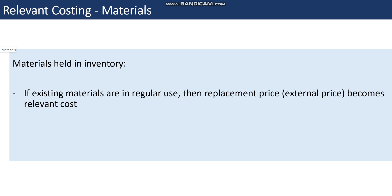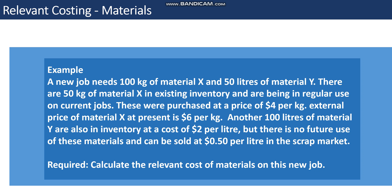Let's look at a short example. A new job needs 100 kilograms of Material X and 50 liters of Material Y. There are 50 kilos of Material X in existing inventory, being used regularly on current jobs; these were purchased at four dollars per kilo — that four dollars per kilo is irrelevant as it's a past cost. The external price of Material X at present is six dollars per kilo.